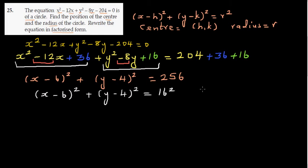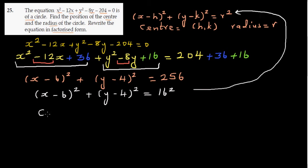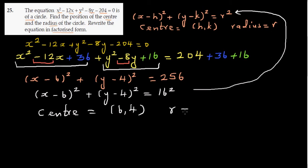Comparing this with the standard form x minus h, whole squared, plus y minus k, whole squared, equals r squared, we can identify that the center is 6 comma 4 and the radius is 16 — wait, r equals 16, so the radius is 16. Actually comparing: h equals 6, k equals 4, and r equals 16.